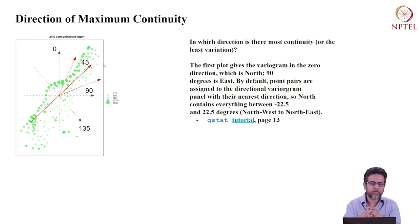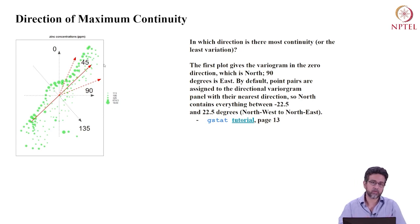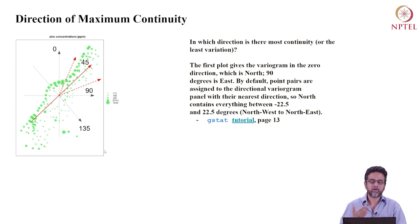There is a term you might come across in geostatistics literature called the direction of maximum continuity. What I want you to understand is that spatial variation differs by direction — in certain directions things vary a certain way and in another direction maybe not so much. Looking at this dataset — zinc concentrations in parts per million over the river bed of the River Meuse — I want you to look at this plot and tell me which direction has the most similar values, i.e., the direction of maximum continuity or the direction of least variation.